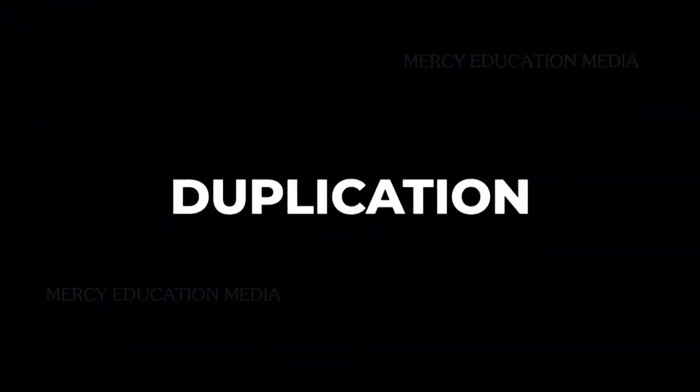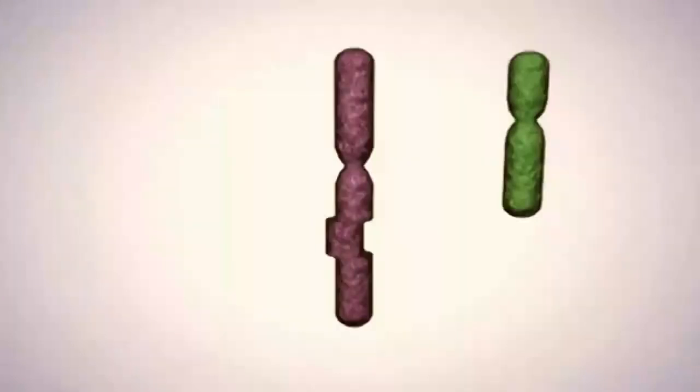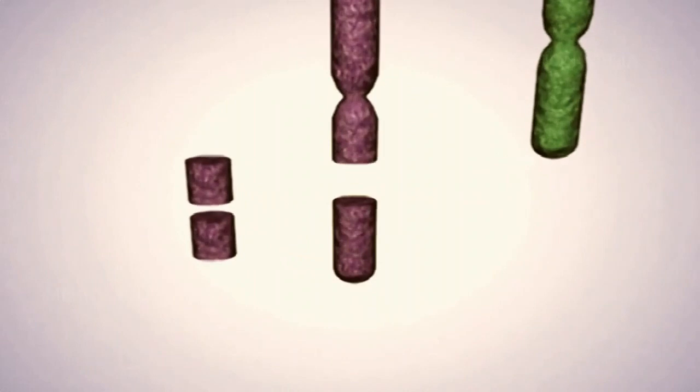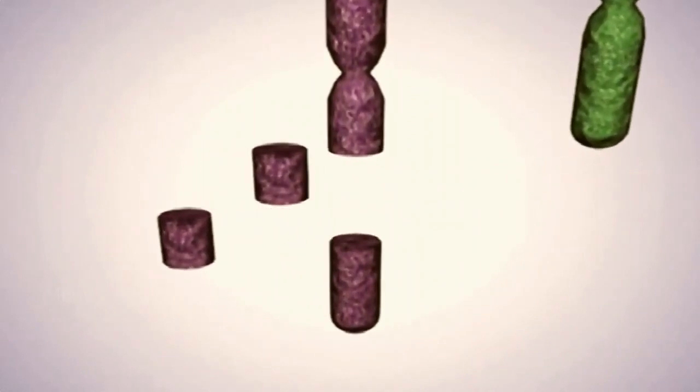What is duplication? When a segment of a chromosome is present more than once in a chromosome, then it is called duplication.